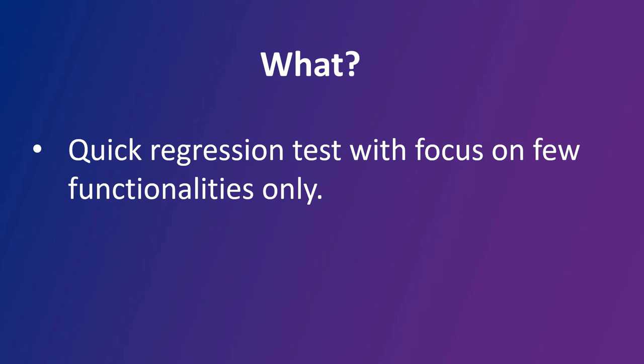Sanity testing is a quick regression test — not your full regression testing, but just a quick look to make sure that the impacted functionalities are working as expected. Generally, sanity testing is undocumented. It's just a quick check to make sure you can get started with your regression and proceed with your actual testing when everything looks good.